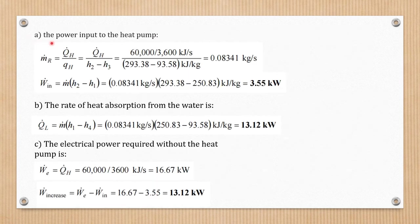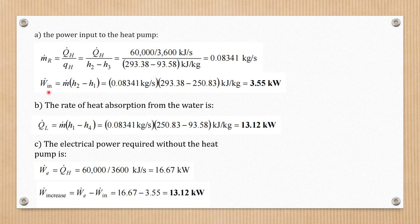First, we're going to find the power input to the heat pump. The mass flow rate of the refrigerant is equal to Q̇_H divided by the specific heat, where the specific heat is equivalent to h2 minus h3. Substituting the values, we get 0.08341 kilograms per second. Now that we have the mass flow rate, the power input to the heat pump is equal to mass flow rate times (h2 minus h1). Substituting all given values, we get 3.55 kilowatts.